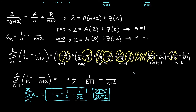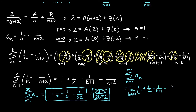For the infinite sum, we look at the limit as k approaches infinity of 1 plus 1 half minus 1 over k plus 1 minus 1 over k plus 2. Both fractions go to 0 as k approaches infinity, so we end up with 1 plus 1 half — the infinite sum approaches the value of 3 halves.